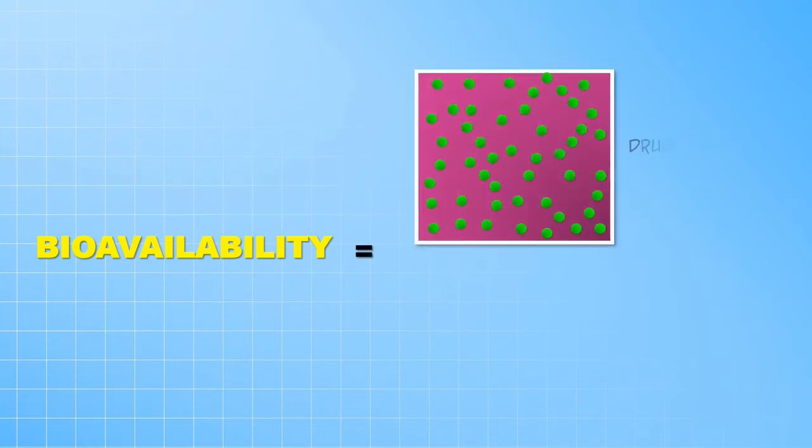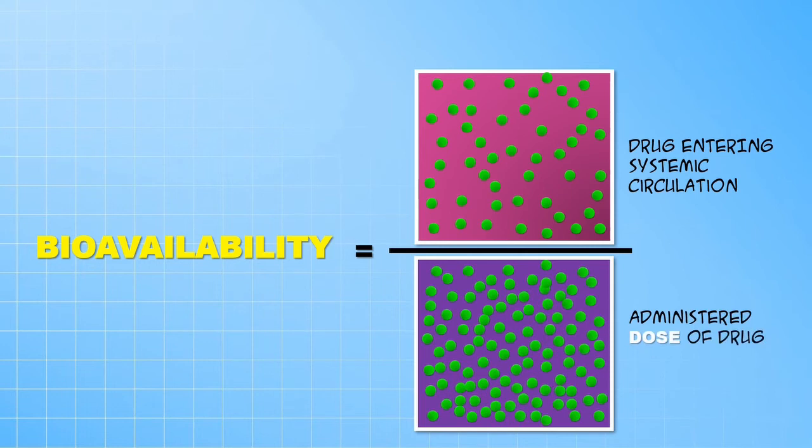The final fraction of administered drug eventually makes its way into the systemic circulation. This final fraction of the administered drug that eventually makes it into the systemic circulation constitutes the bioavailability of the drug.